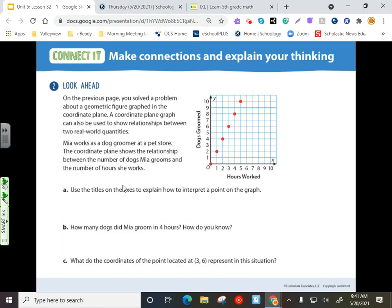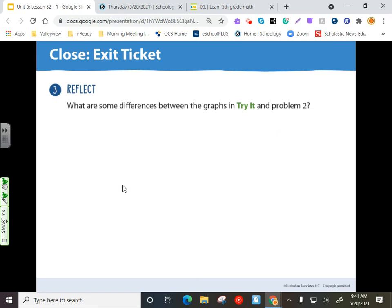And the last question here, the reflection. What are some differences between the graphs in Try It and problem two? Pretty simple. The big difference is, granted, the first graph just shows a polygon. The second graph represents a real-world situation.